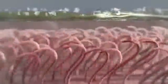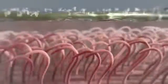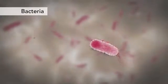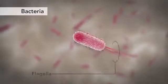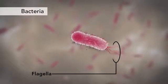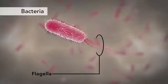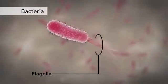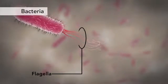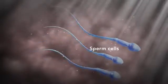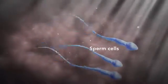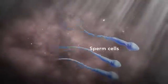Another unique feature in some cells is flagella. Some bacteria have flagella. A flagellum is like a little tail that can help a cell move or propel itself. The only human cell that has a flagellum is a sperm cell.